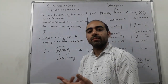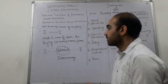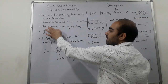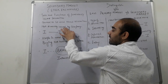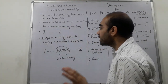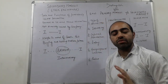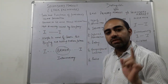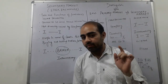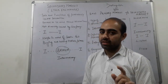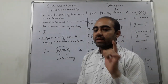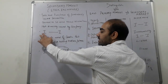The third point is that securities are not directly issued by the company in the secondary market. The company directly issues only in the primary market. The secondary market is not a direct issuance by the company.